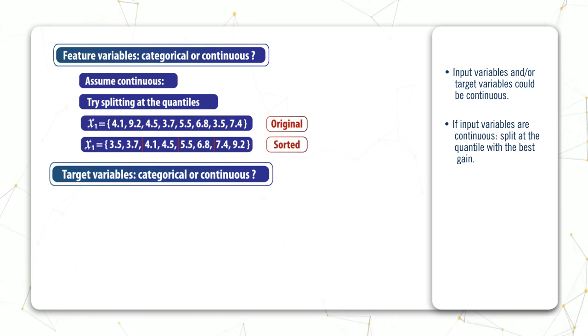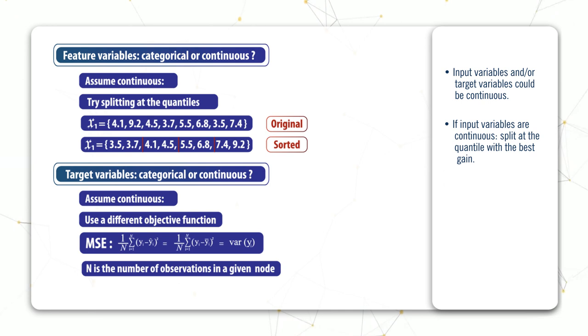That's how the decision tree handles continuous features. Now how about continuous target variables? Well, when the target variable becomes continuous, we now have a tree regressor instead of a tree classifier. For example, instead of trying to predict whether or not Alice goes for a run, it would be like trying to predict the duration over which Alice went for a run—some sort of positive real number. In such a case, the objective function that's used is the mean squared error, also known as MSE.